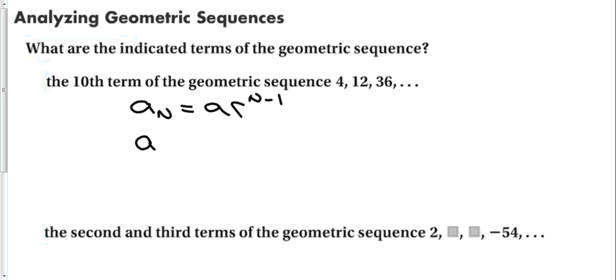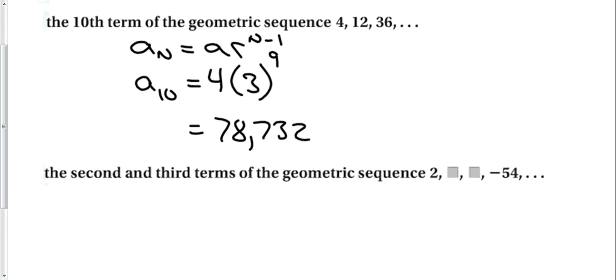And now we are going to look for the tenth term of the sequence, which gives us 4 is the first term. The common ratio, 12 divided by 4 is 3. That's going to be times 3 to the n minus 1 power. 10 minus 1 is 9. This one is going to need a calculator because I can't do 3 to the ninth in my head. Times 4 gives me 78,732. Big number, but that's okay. Geometric sequences can get pretty high.